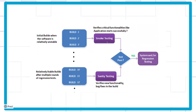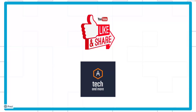I hope the difference between sanity and smoke is clear. I've put up a flowchart showing two sections: the first is the initial unstable build — that's when you do smoke testing. After testing, you find some non-major bugs, give them to the development team, they fix it and provide a relatively stable build. When you verify the bugs are fixed and the functionality is working as expected on that stable build, that is termed sanity testing. No need for deep theories — this is all you require.